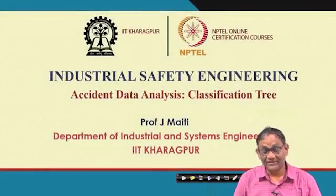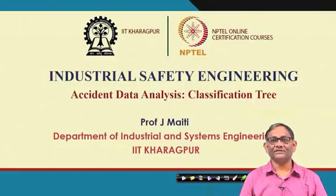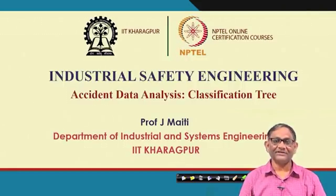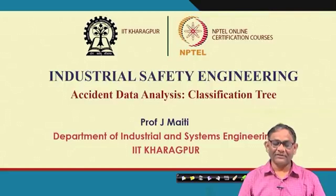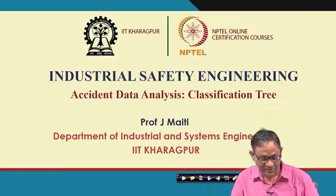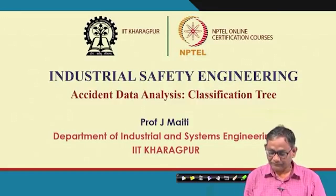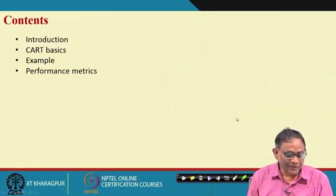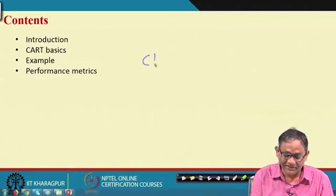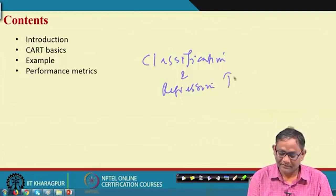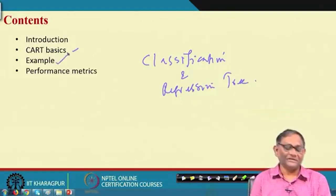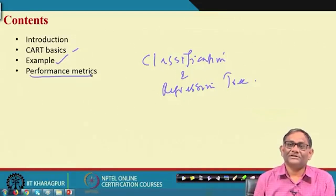Hello everybody. We will discuss classification tree as a part of accident data analysis. In the last class we discussed regression — the concepts, basics, and some results. For classification tree I will do the same thing. We will not deal with detailed mathematical issues here; our purpose is to see how classification tree will be useful in accident data analysis. The concept of CART — Classification and Regression Tree — will be discussed, then one example, and then the performance matrix of classification tree.